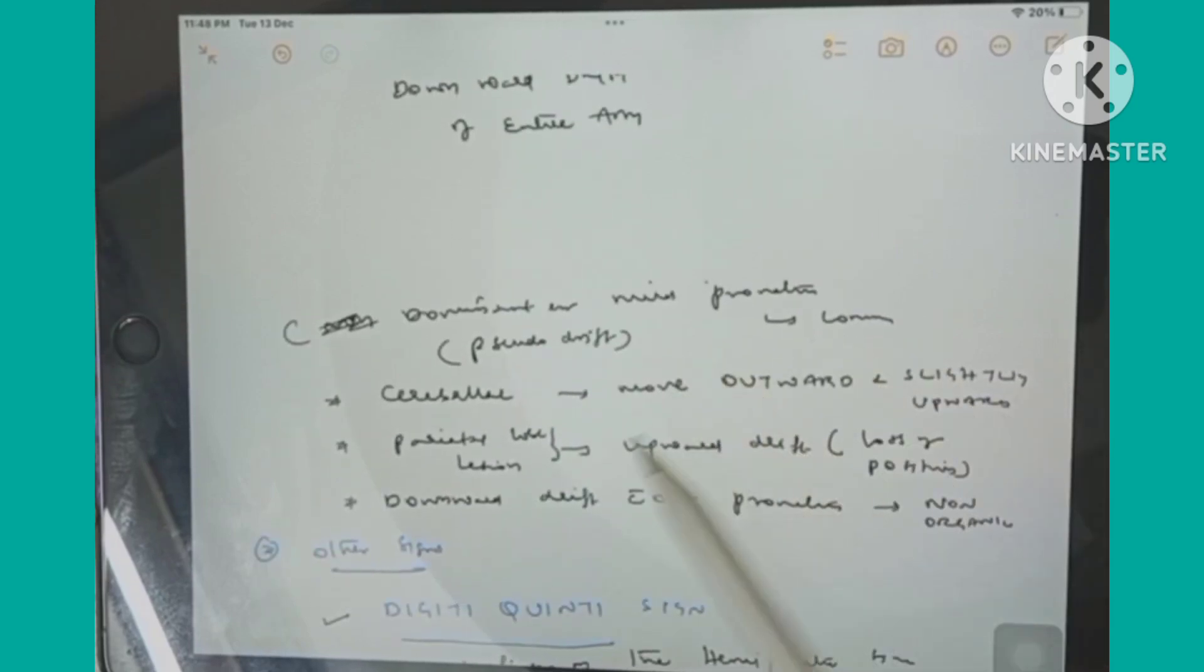Then coming to pseudo drift: in dominant hand there will be mild pronation without any flexion at the elbow, and this is called pseudo drift. Coming to cerebellar drift: there will be outward movement of the arm.